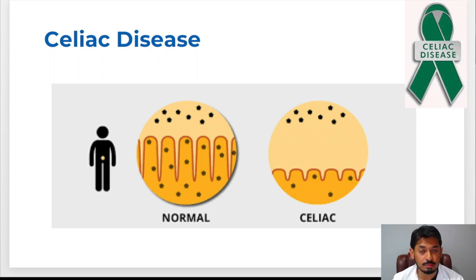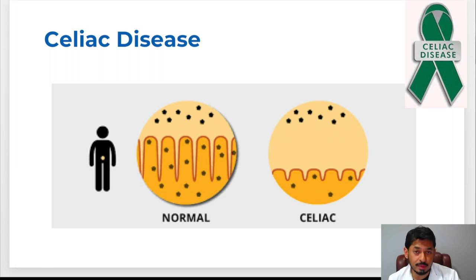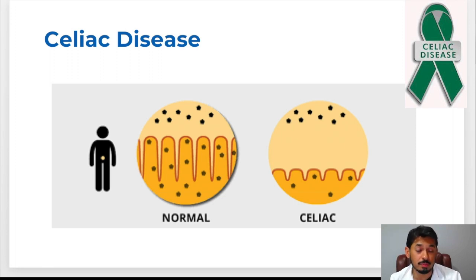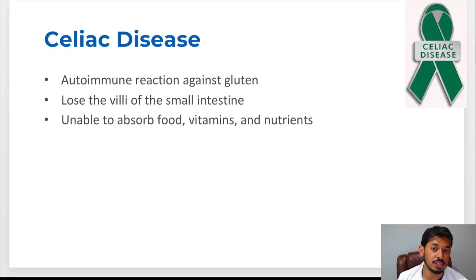Because of that you can present in many different ways — whether it's anemia, vitamin D deficiency, diarrhea, bloating, upset stomach, indigestion, and even constipation in some patients — all due to the inability to absorb those minerals, vitamins, and nutrients. Whenever you lose those villi, that can manifest in multiple different symptoms whether they are GI or non-GI related.